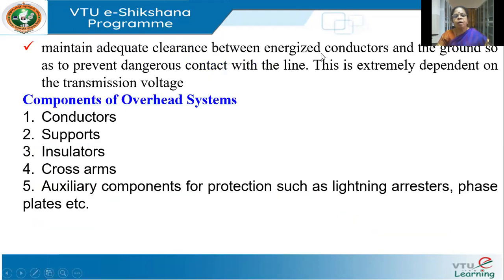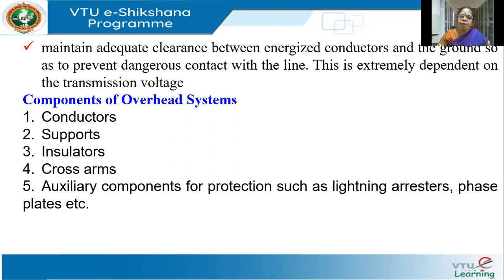Now we will see what are all the components of the overhead systems. First, we have conductors, supports, insulators, cross arms, and other auxiliary components for protection. In this session, we'll see about different types of conductors and supports.